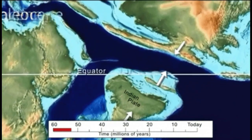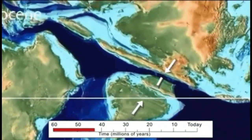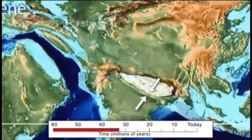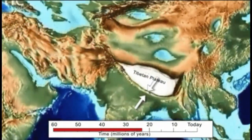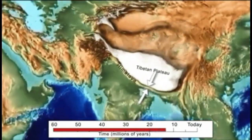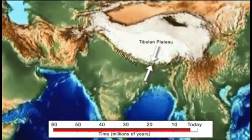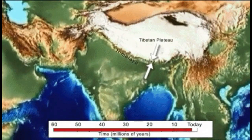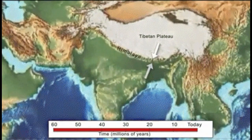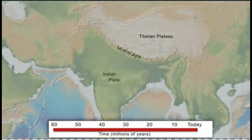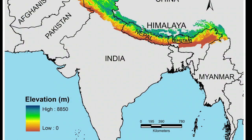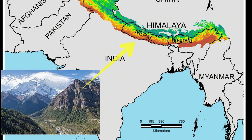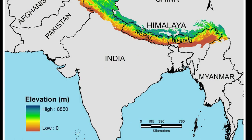Converging continental crust or plates result in a collision zone which could cause shallow earthquakes; at that place a crack called a fault is formed. This type of convergence will cause no subduction since the two plates have the same density. There would be no volcanoes formed and no tsunamis. These converging plates may result in highland formation that we call mountain ranges.